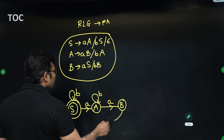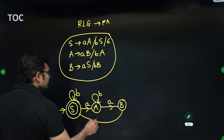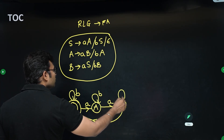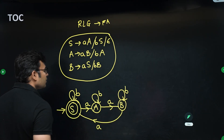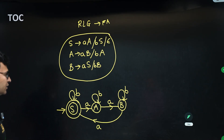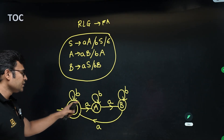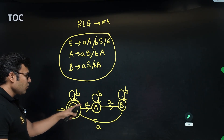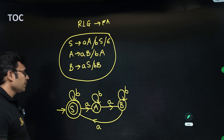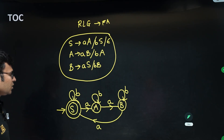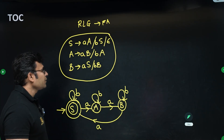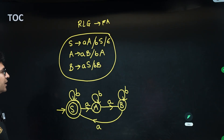B on small a goes to S, and B on small b goes to B. Now if you observe, this is the set of all strings where the number of a's is divisible by three — so you have directly converted the grammar to a finite automata.